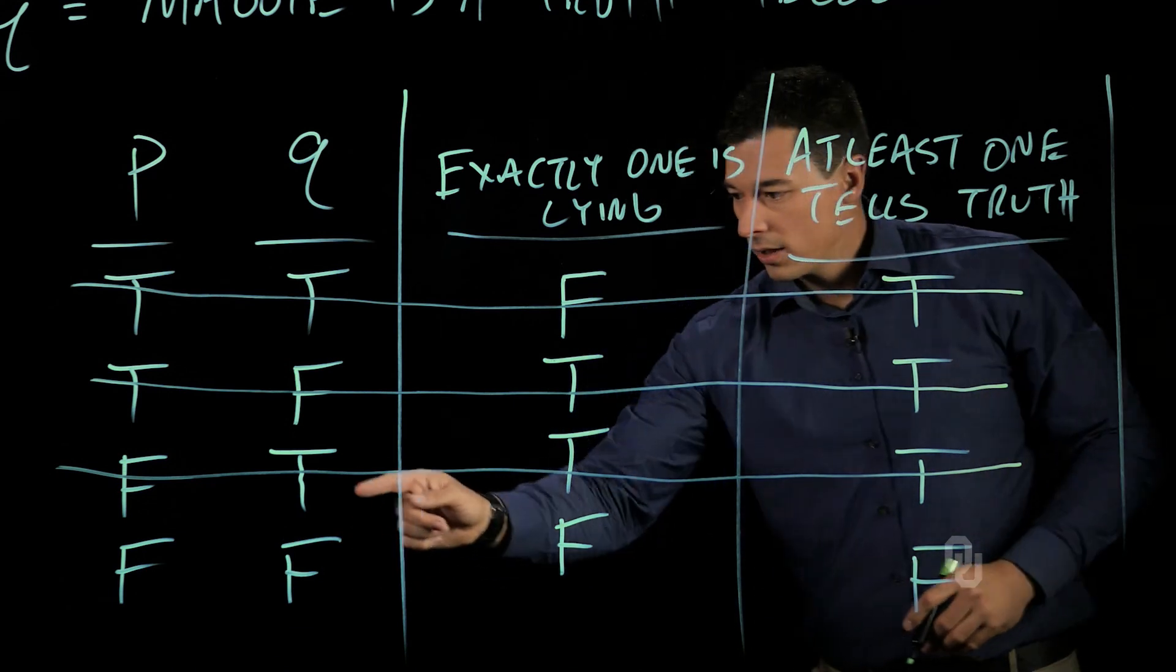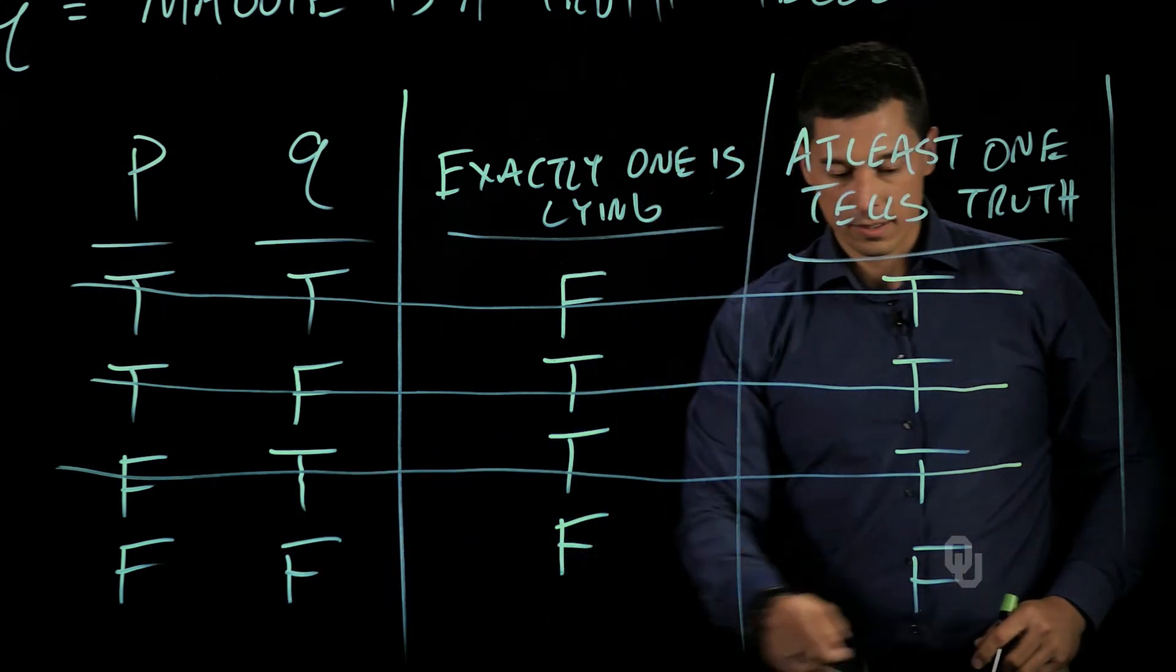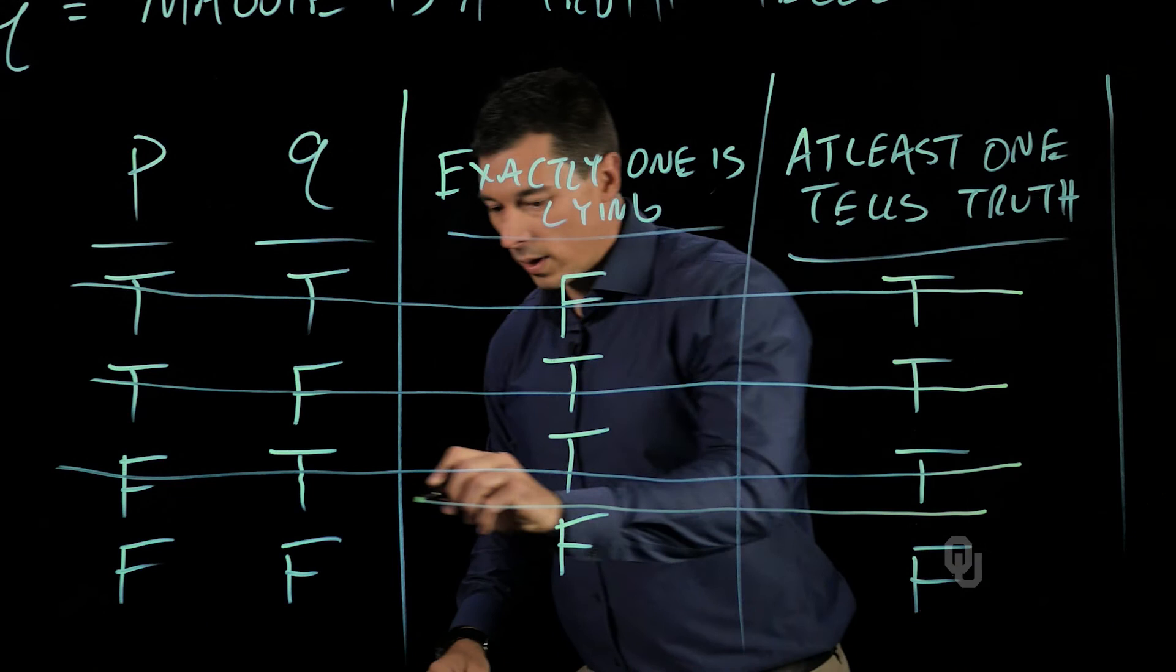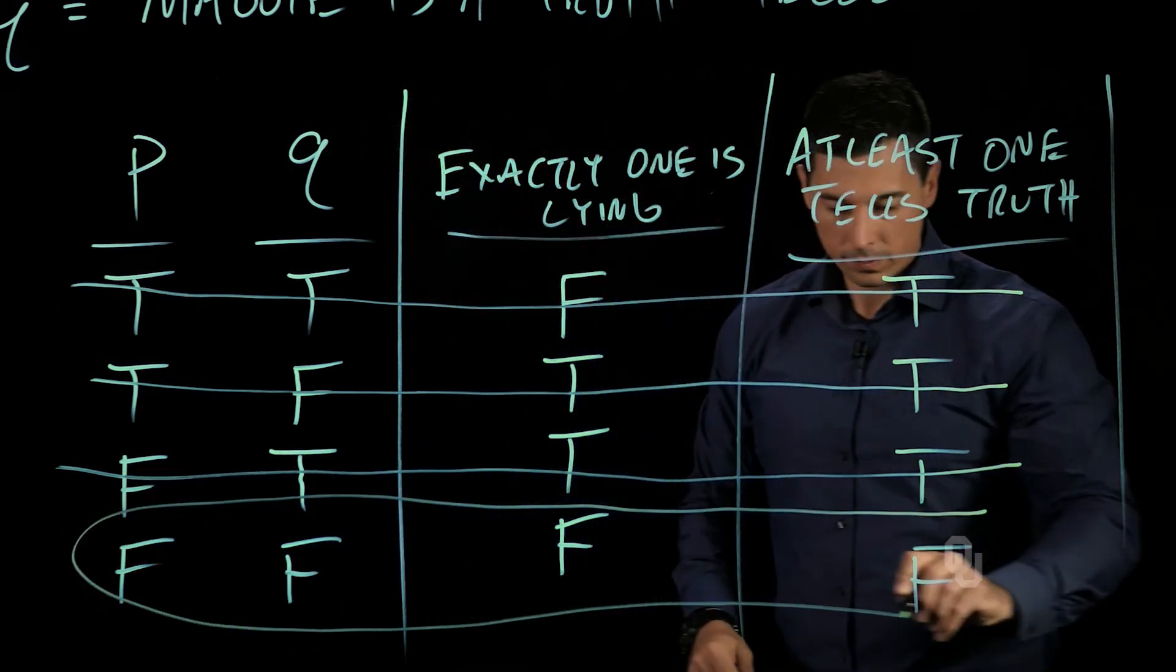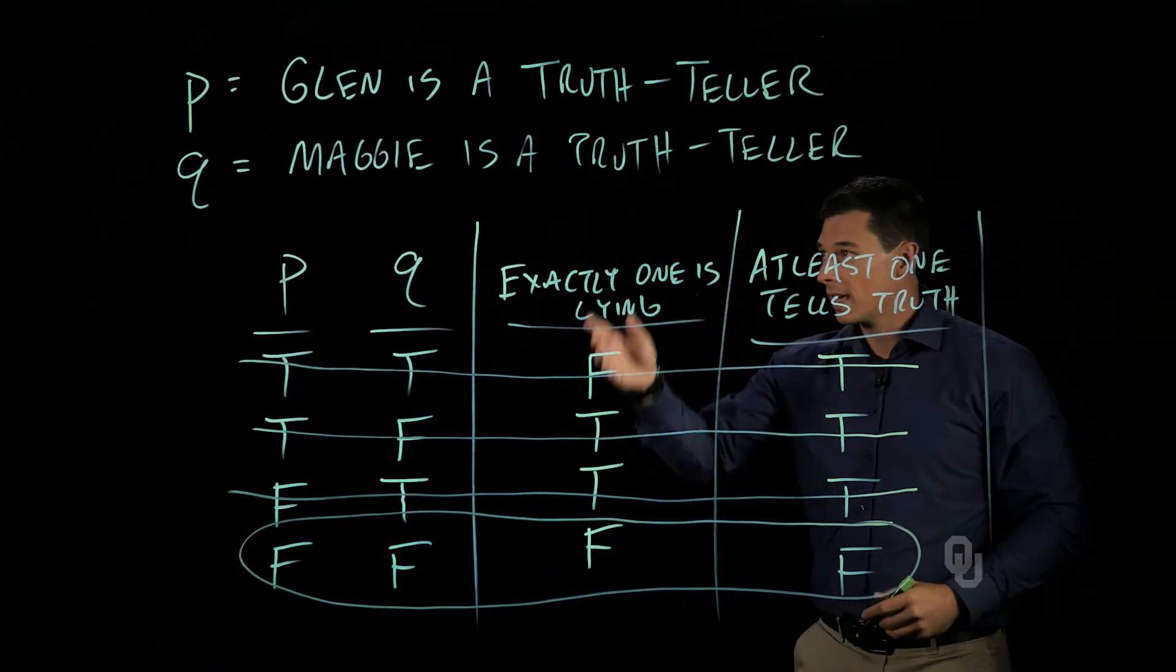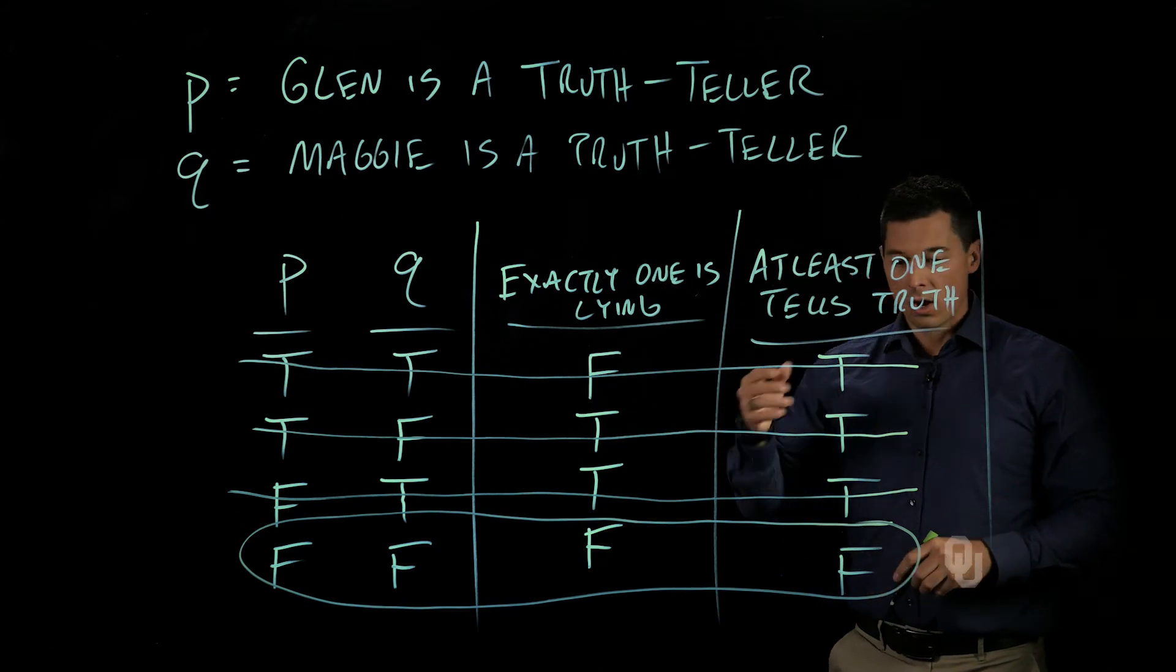And so we have a liar telling a lie and another liar telling a lie. So now, we can decompose the problem and realize the only consistent case that exists is that both Glenn and Maggie are liars.